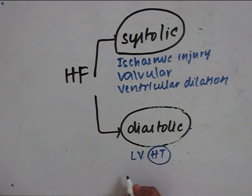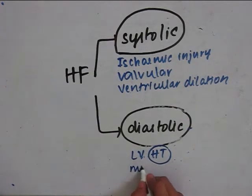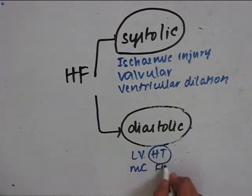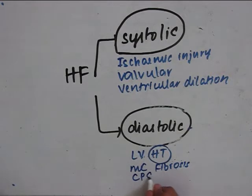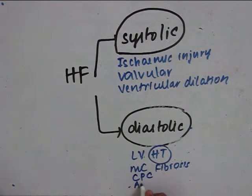Diastolic heart failure is also seen in myocardial fibrosis, constrictive pericarditis, and amyloid deposition. Now let us discuss about the pathophysiology of congestive cardiac failure, or heart failure.